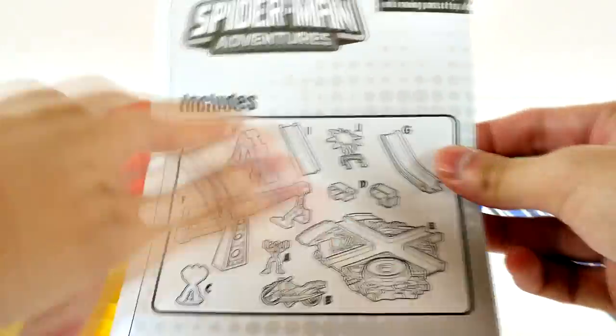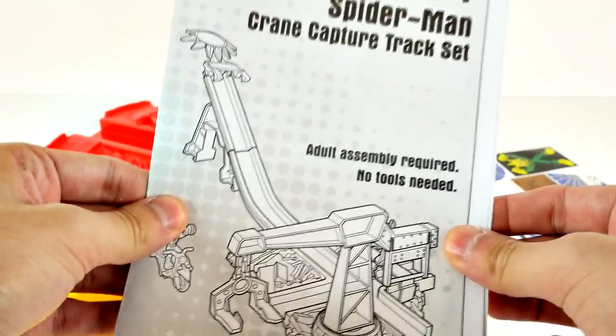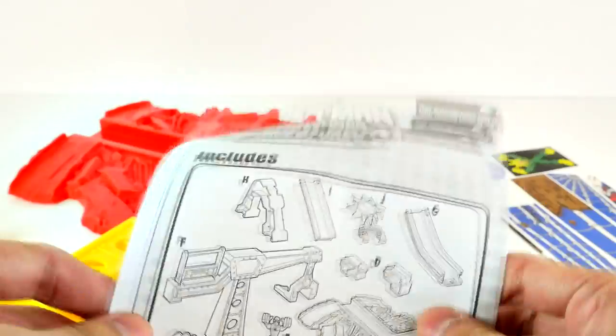It comes with this little manual and it shows all the pieces you get. And on the other side, there it is, all put together. Adult assembly required, no tools needed.